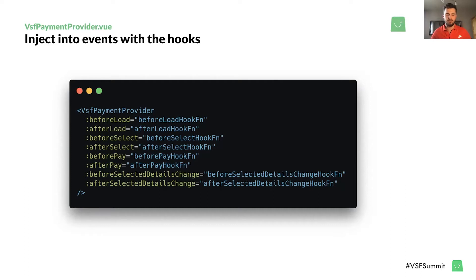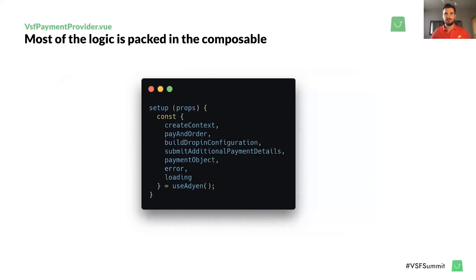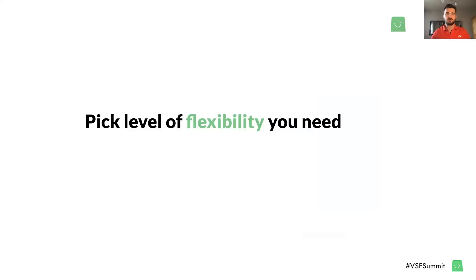Hooks give you a lot, but in some cases it might not be enough. Each payment module has a composable with methods and state which are used by the VSF payment provider. If you really need to, you could create your own Vue.js component and just reuse our logic. In that case, we recommend copying our component and modifying only what's needed, so it remains easy to update in the future. You can literally pick the level of flexibility you need: if you want to integrate fast, use our well-tested component; if you want to react to certain events, use hooks; if that's still not enough, create your own component based on ours; or if you want a totally different structure, just reuse the composable from the package.